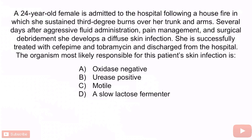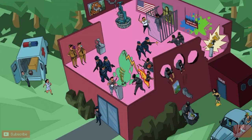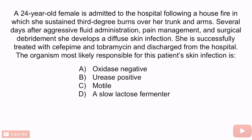There are three key points from the question that should help you get this answer correct. First, the patient is a burn victim who sustained third-degree burns. Second, she developed a diffuse skin infection. And finally, she was successfully treated with cefepime and tobramycin. Each of these clues are suggestive of Pseudomonas. The correct answer is C — the organism is motile. The flag in the image helps you remember that Pseudomonas is a flagellated, motile organism. The guy getting burned helps you remember Pseudomonas is associated with burn victims. The pine tree and minnows in the fountain help you remember treatment with cefepime and aminoglycosides such as tobramycin. Pseudomonas is oxidase positive, urease negative, and does not ferment lactose — so A, B, and D are incorrect.